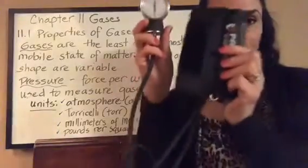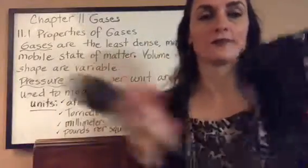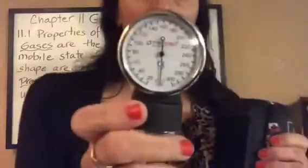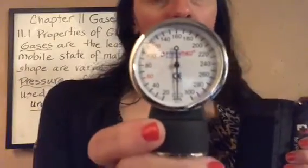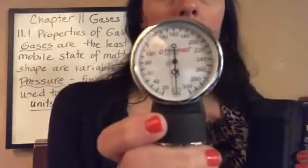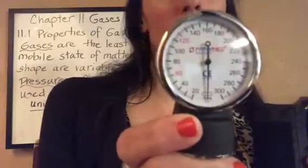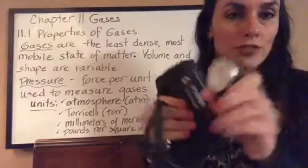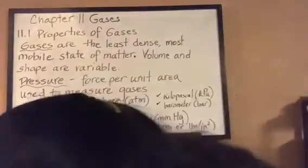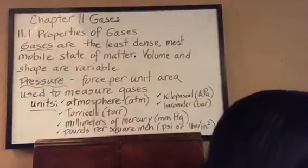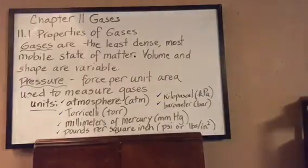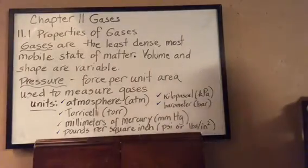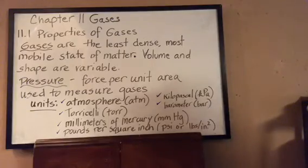Another device used to measure pressure is a blood pressure cuff. The gauge on the blood pressure cuff has pressure readings in millimeters of mercury — it's calibrated to give blood pressure readings in that unit. We'll talk about the blood pressure cuff in a future lecture and how it relates to one of the gas laws.